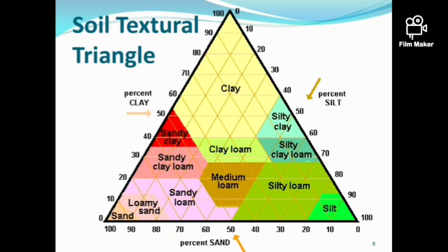The soil texture triangle is one of the tools that soil scientists use to visualize and understand soil texture names. The textural triangle is a diagram which shows how each of the 12 texture classes is classified based on the percent of sand, silt and clay. These percentages are based on the USDA standards.